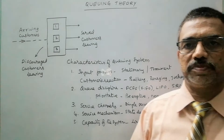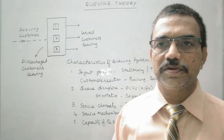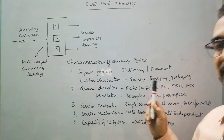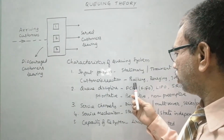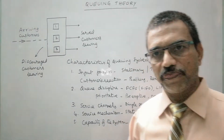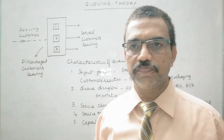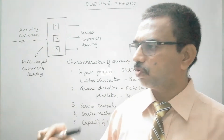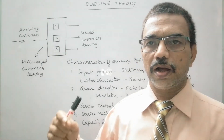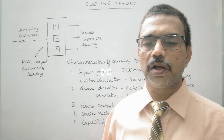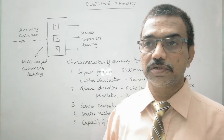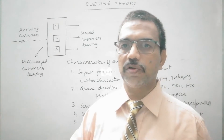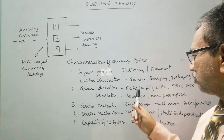Next, coming to the customer's reaction — how customers will behave or react in a queuing system. We can observe three kinds of reactions: one is balking, second is reneging, and third is jockeying. First, let us see what balking is. In some cases, a new customer who wants to enter into the queuing system will just look at the length of the queue and, just by looking at the length, decides not to enter into the queue, as his service may not be done in time or the system may close before he gets service. So the customer decides not to enter just by looking at the queue length. When the length is very large, such behaviour is called balking.